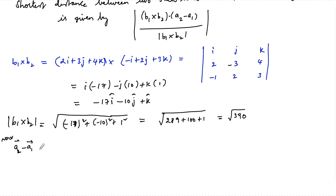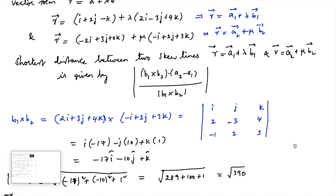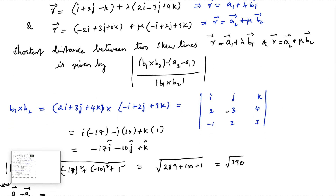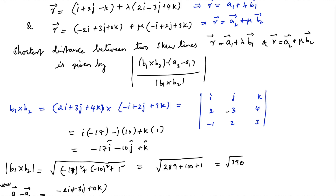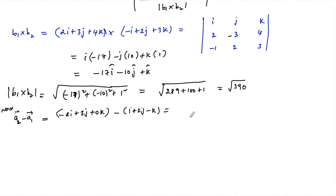Now, a₂ − a₁ = (−2i + 3j + 0k) − (i + 2j − k) = (−2−1)i + (3−2)j + (0+1)k = −3i + j + k.